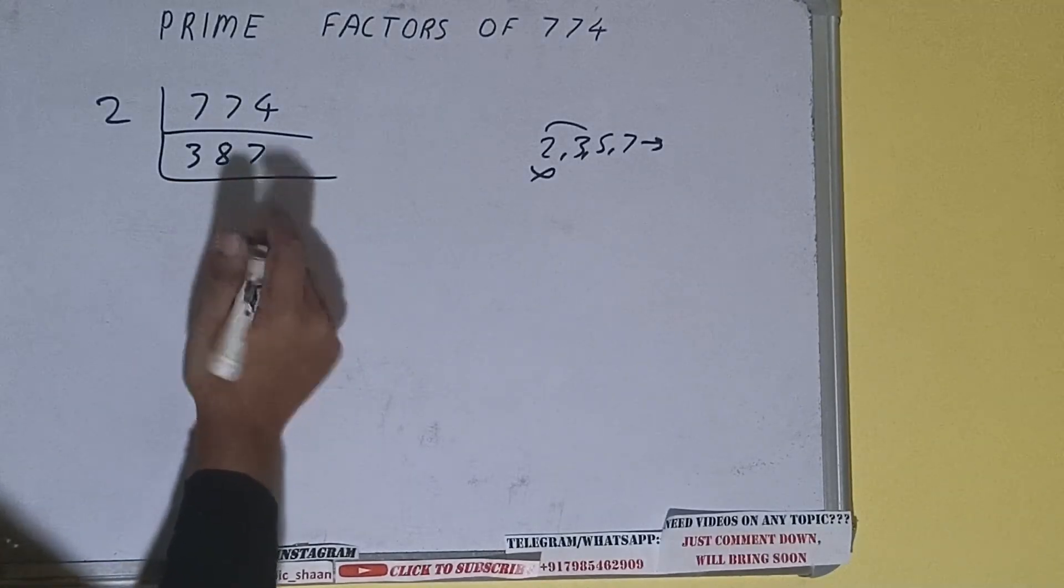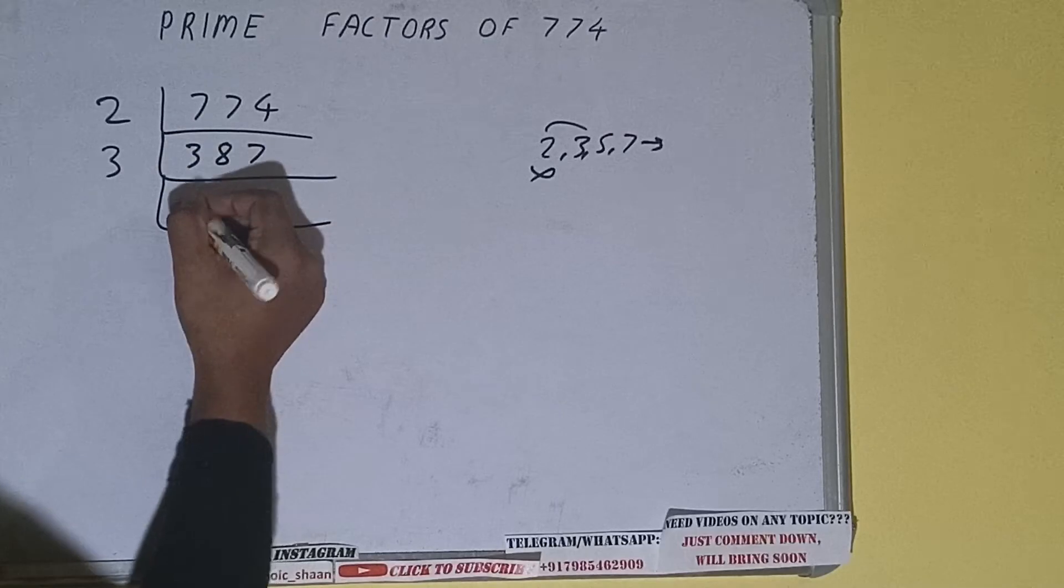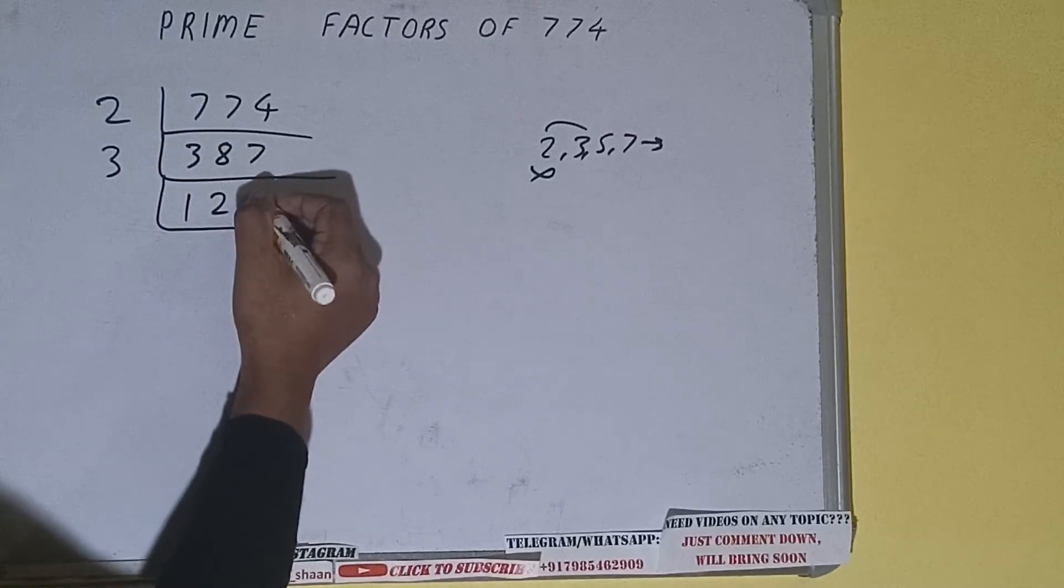3 into 387: 3 into 3 is 1, 3 into 8 is 2 with remainder 2, bringing down 7 makes 27, and 3 into 27 is 9. So 387 is divisible by 3, so divide it.